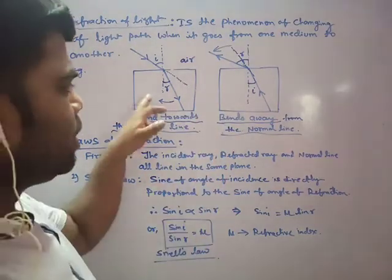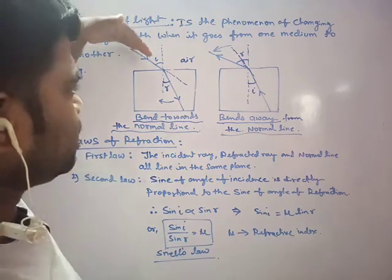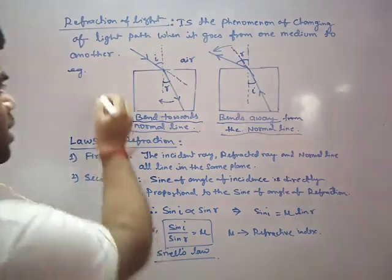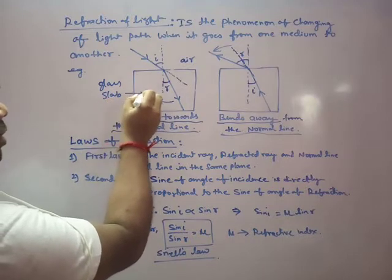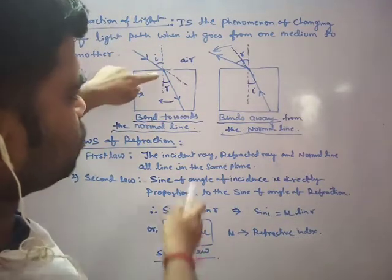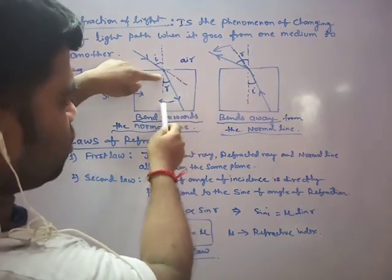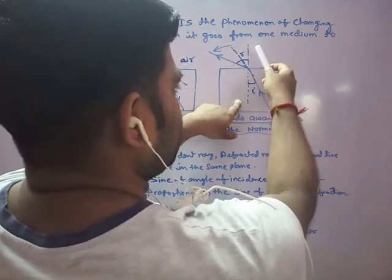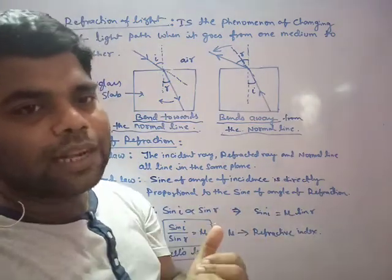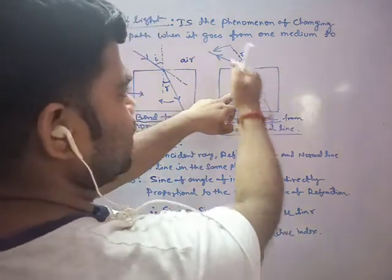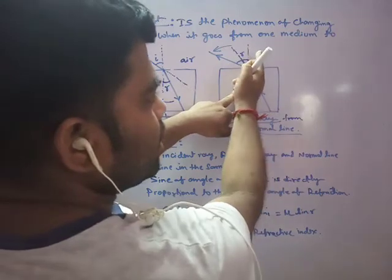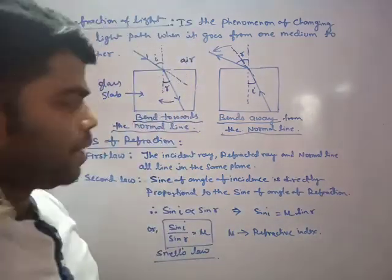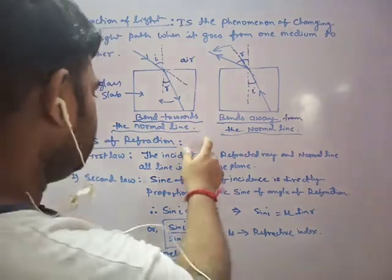The example is the glass slab which is in the laboratory. When you pass light from air to the glass slab — air is one medium, glass is the other. When light goes from air into the glass slab, there is bending towards the normal. When passing from denser (glass) to rarer (air), it bends away from the normal. Keep attention on both phenomena as many questions come from this.